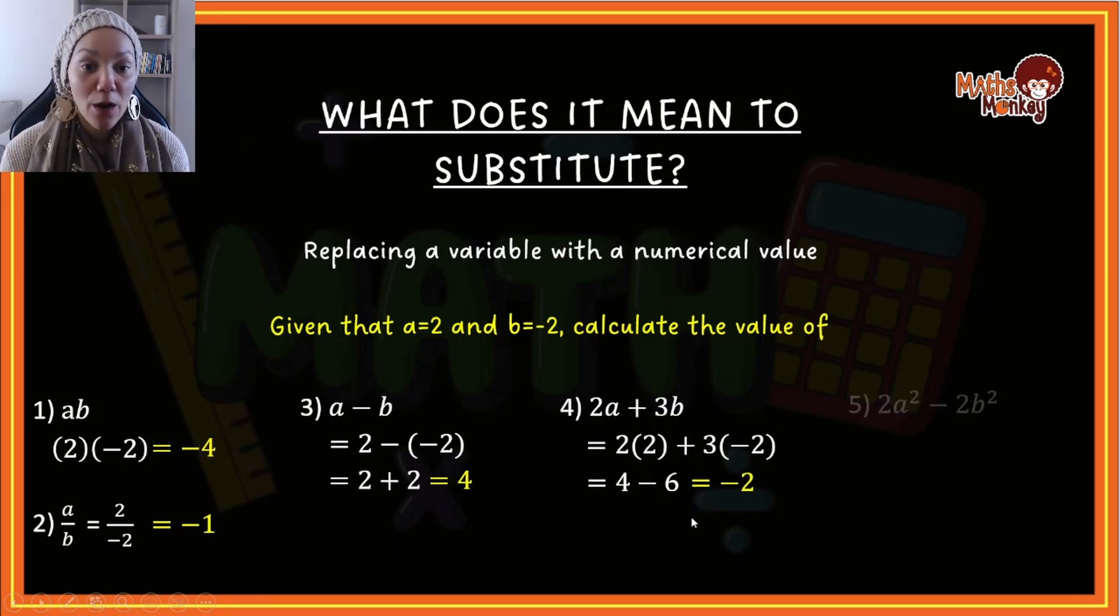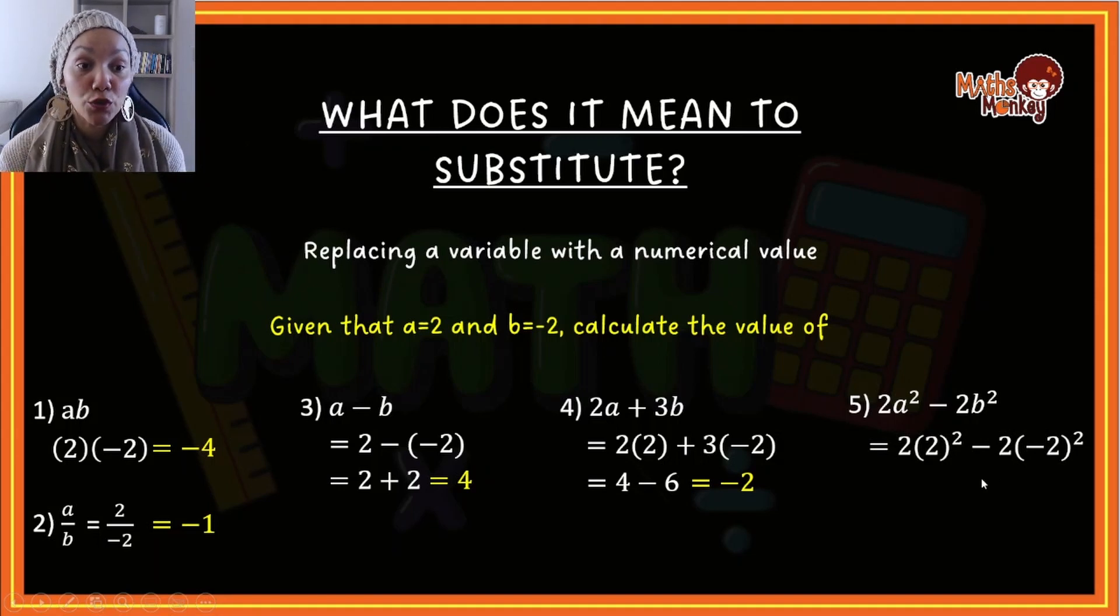Hopefully you're getting the swing of things. Let's try one that's a little bit more difficult. Now we're squaring. Again we've got 2, and wherever I see the a and wherever I see the b, I'm going to replace it with 2 and minus 2. So if you look here, a is 2, b is negative 2. We literally just solve this as we see it. 2 to the power of 2 is 4.